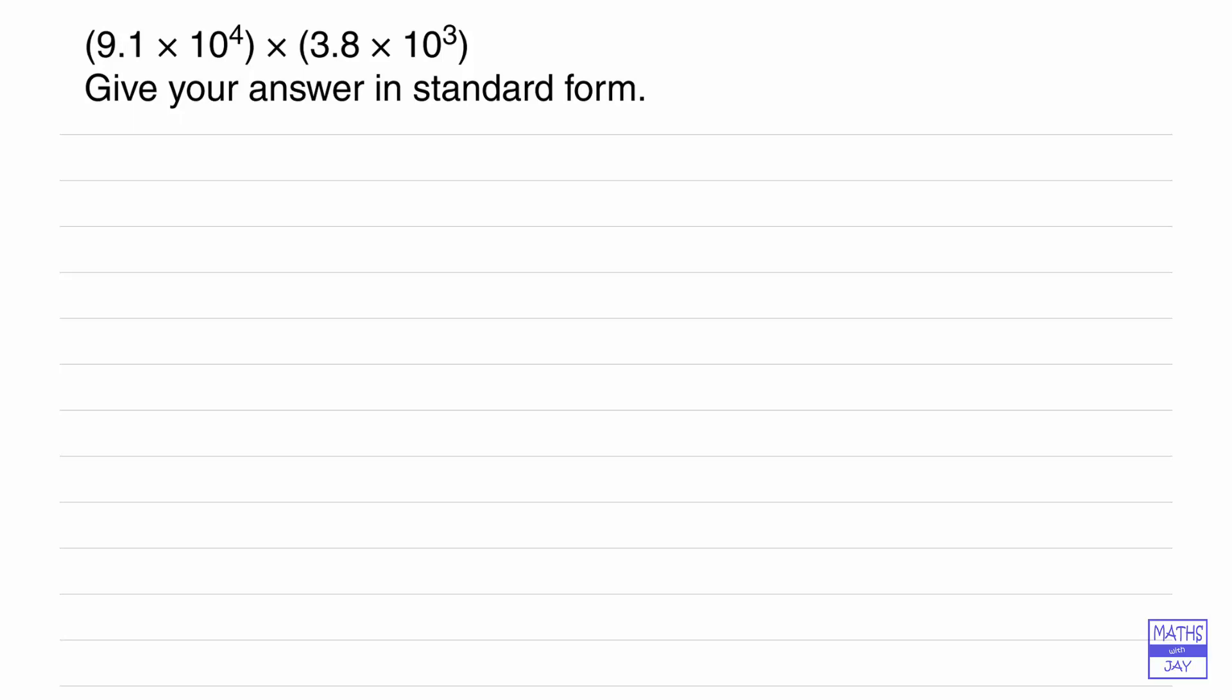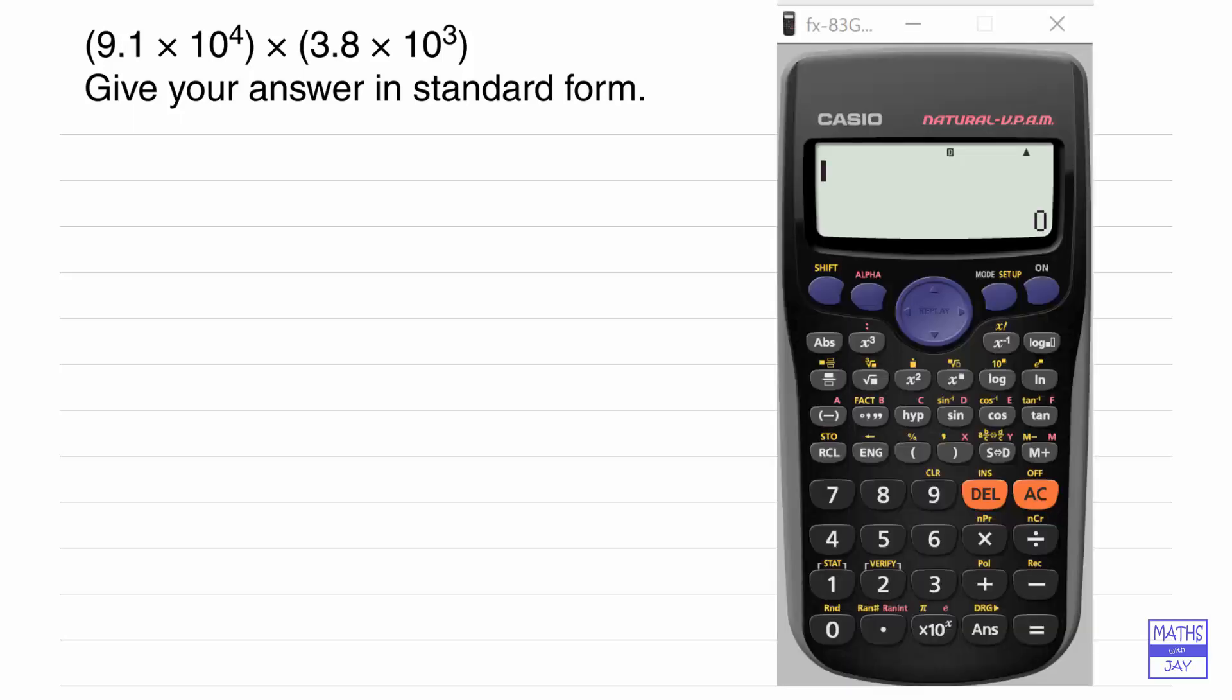So let's get the calculator and we're going to key in 9.1 and then I'm not going to key in times anything because if you look at this key we've already got the times 10 to the power of on the key so now we just key in the 4 and notice I'm not using brackets it's not necessary to use the brackets here.